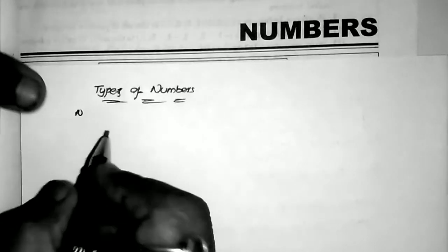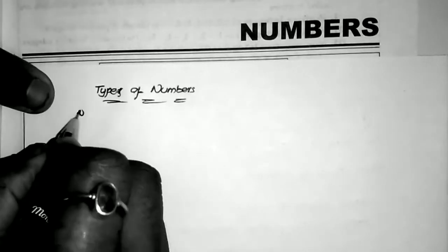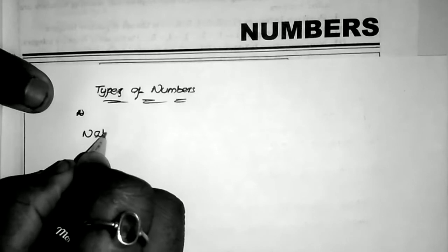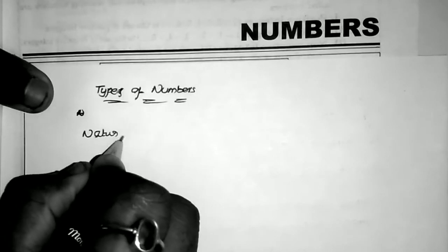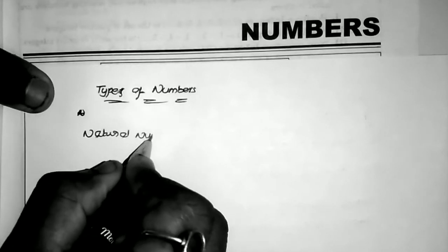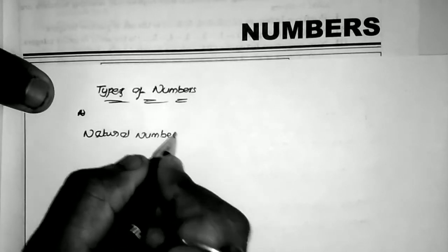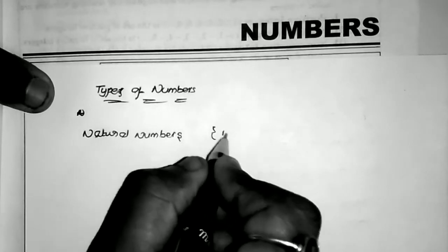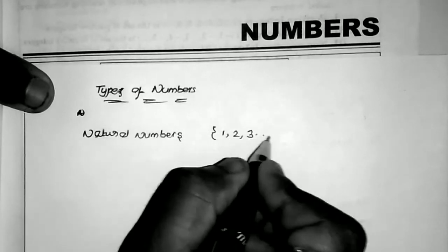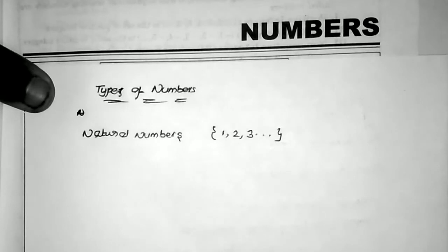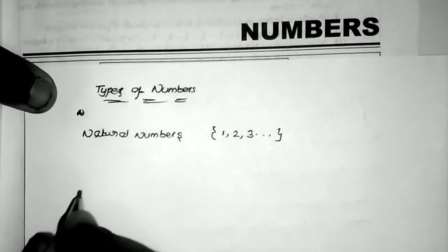Now different types of numbers. The first type is natural numbers. Natural numbers are the numbers 1, 2, 3, 4, 5, 6, 7, 8, 9, and so on. These are all called the natural numbers.